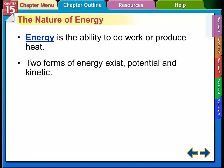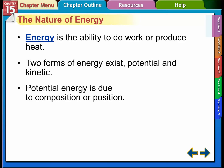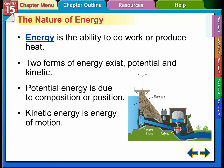The definition of energy is the ability to do work or produce heat. Two forms of energy exist: potential and kinetic. Potential energy due to composition is what we're talking about in chemistry — a substance has potential energy because of its chemical composition, potential energy to do work or produce heat. Kinetic energy is energy due to motion. A reservoir graphic illustrates this: water built up behind a dam has potential energy due to position, and as it flows through a shaft to turn a turbine, it converts from potential to kinetic energy.